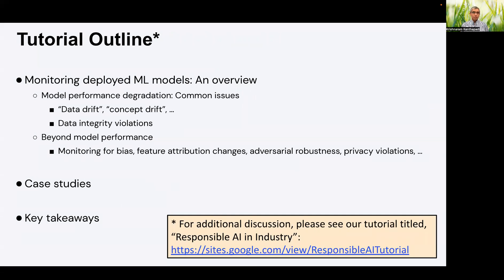With this introduction, in the rest of the tutorial we will briefly cover three dimensions. First, we will describe an overview of monitoring deployed machine learning models, categorized into two parts: the first part focusing on model performance degradation and the common issues underlying such degradation, and the second part focusing on what to worry about beyond just model performance, including bias, feature attribution changes, adversarial robustness, and privacy violations. Then in the second part, we will present a few case studies to illustrate how this is done in practice. Finally, we will conclude with key takeaways. For deeper discussion of some of these topics, please refer to previous tutorials, such as a tutorial on responsible AI presented at FAccT and other conferences last year.